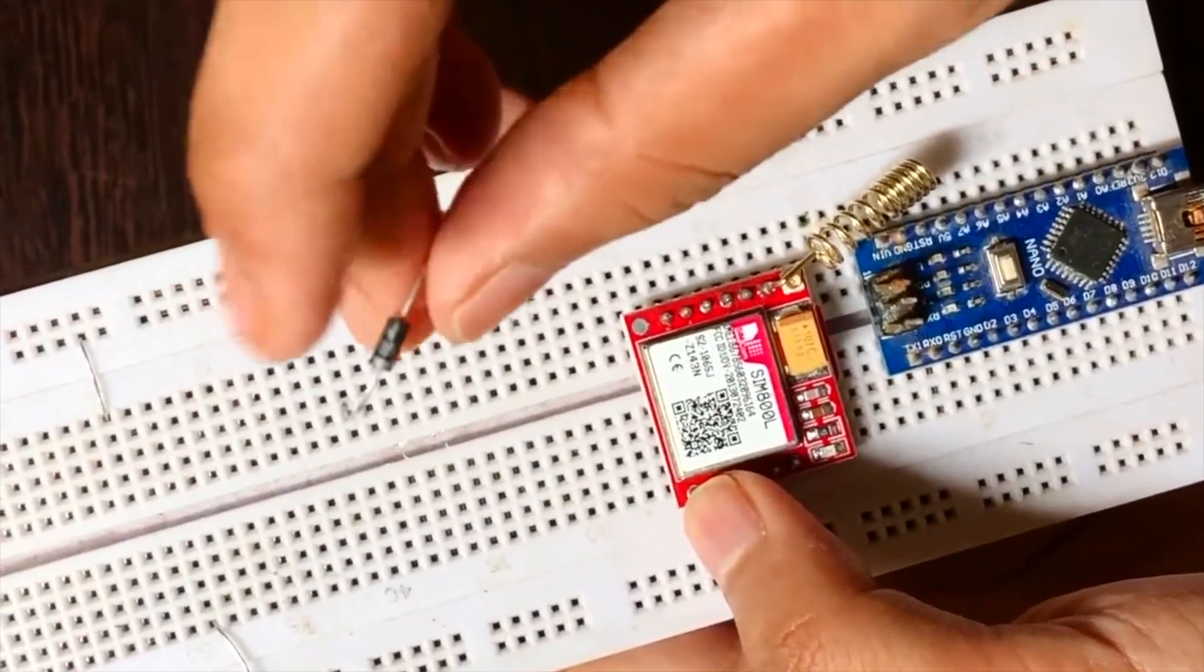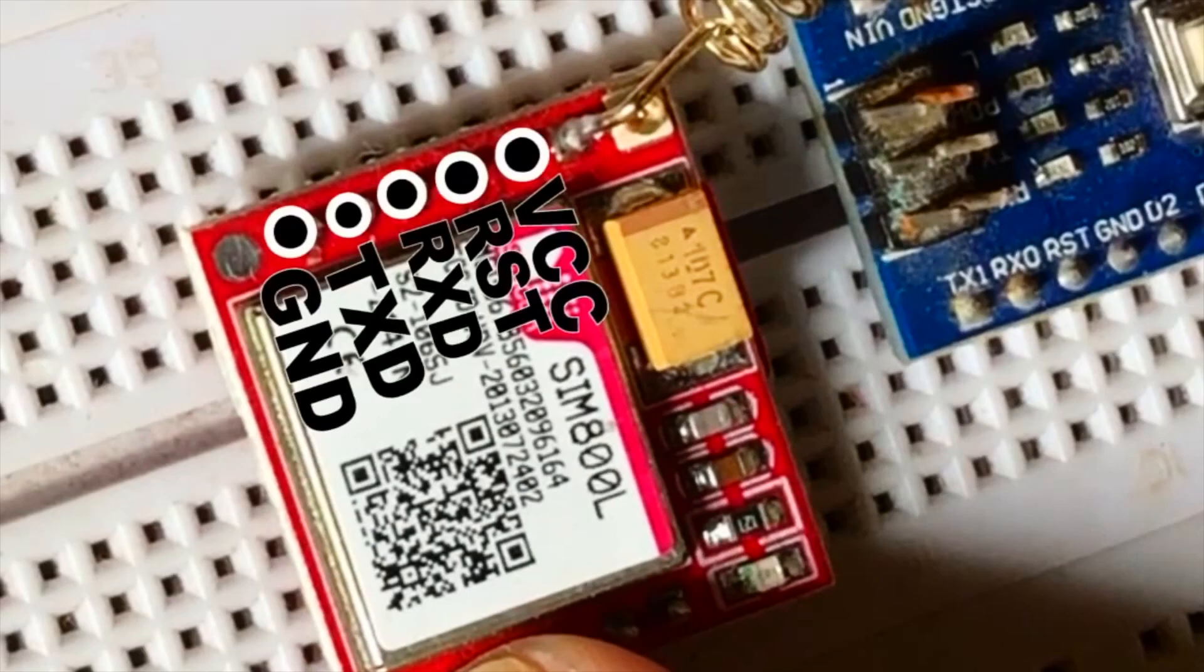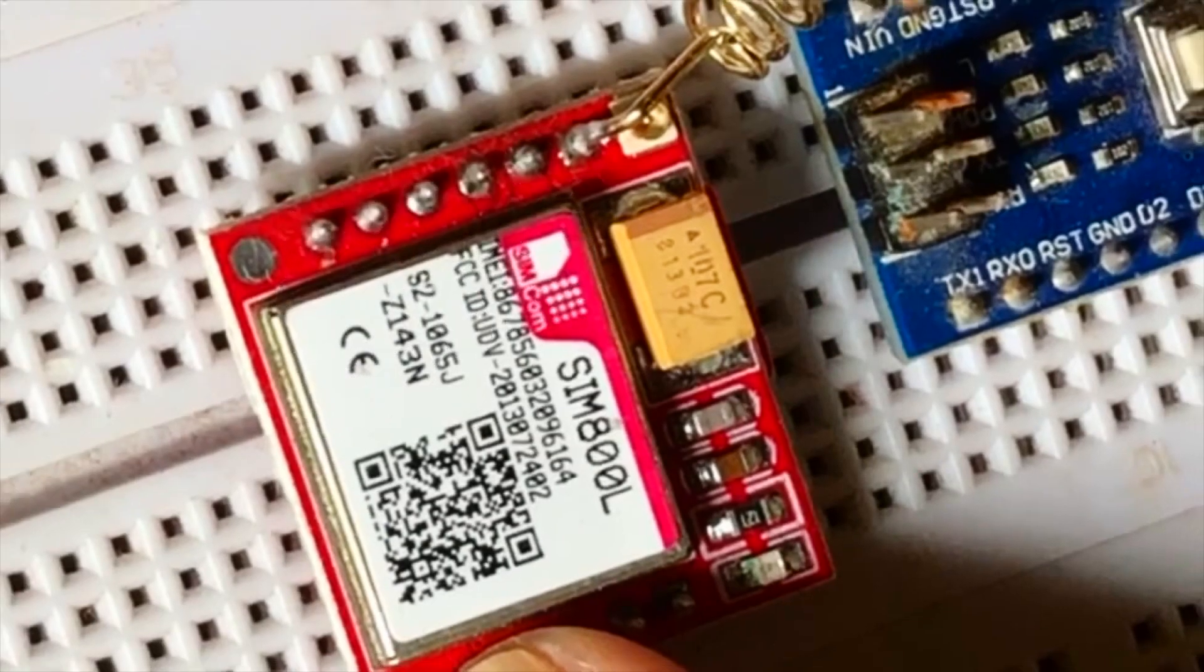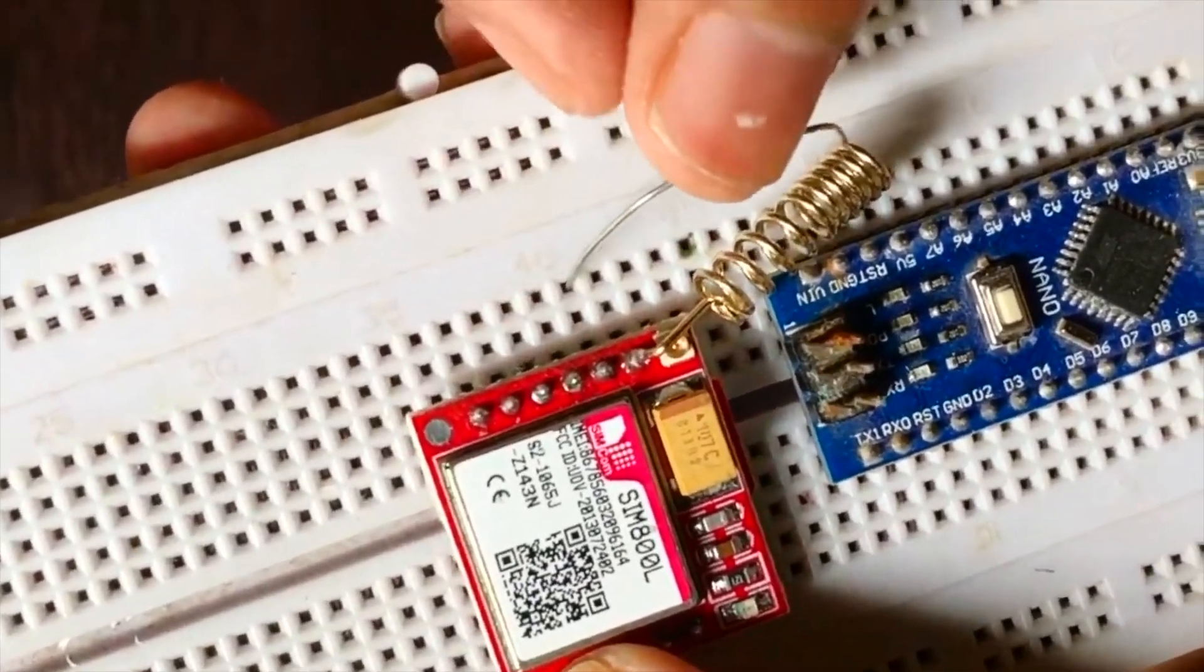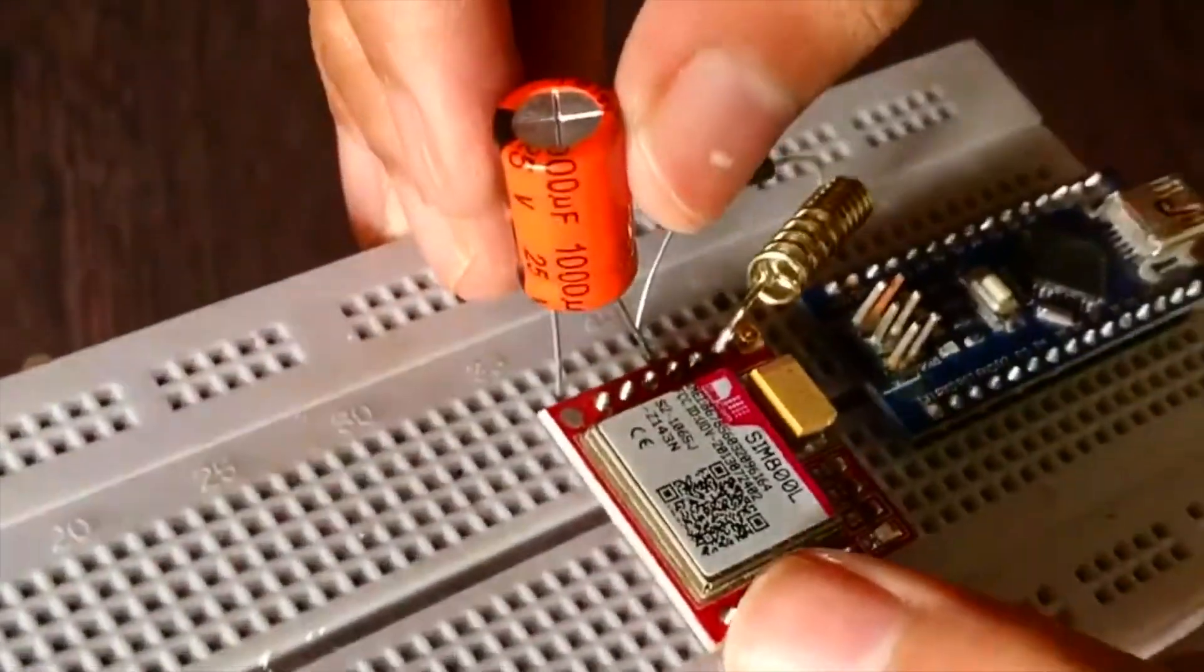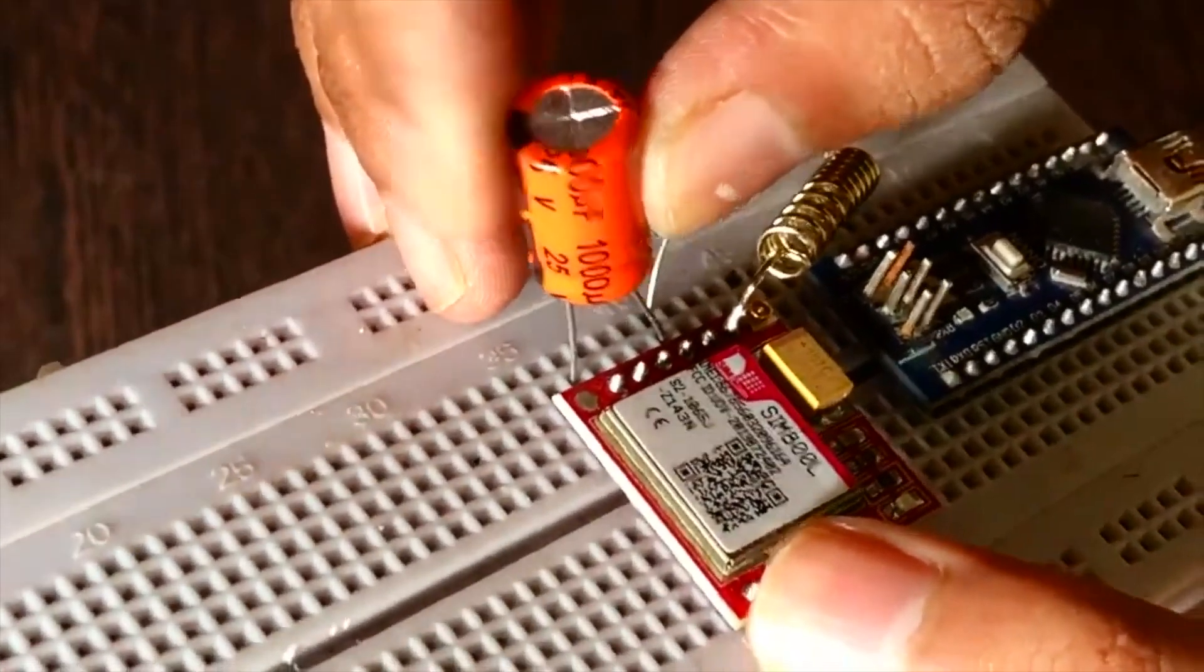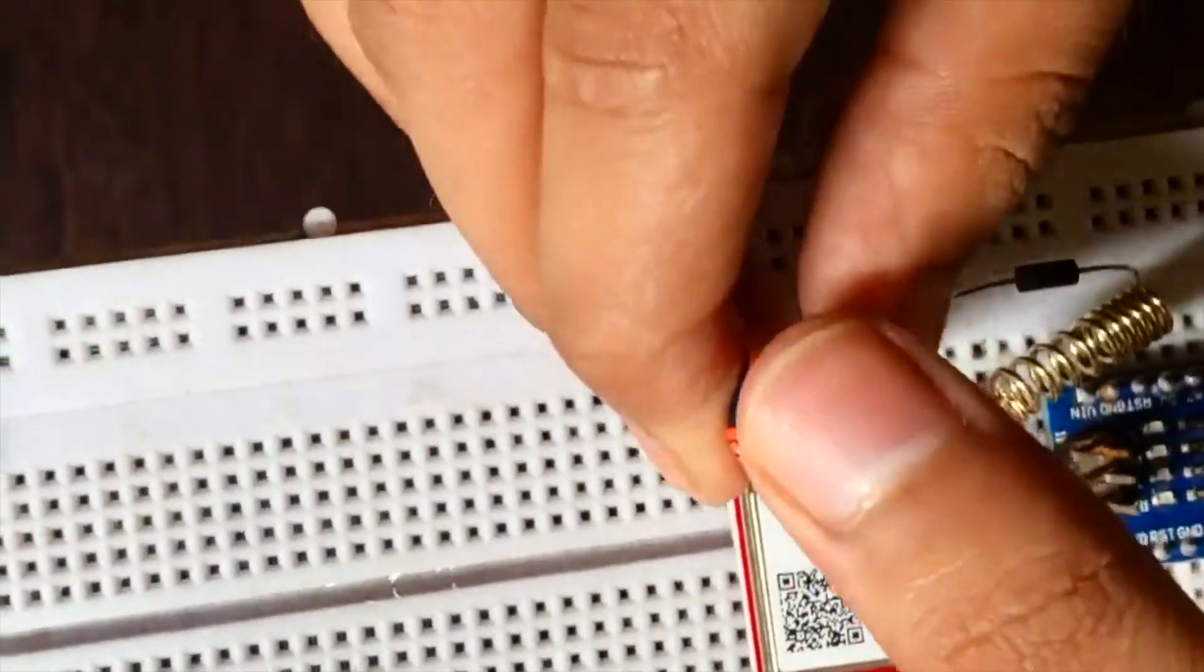This is the 4007 general purpose diode which we need to fix on the VCC and the 5V of the Arduino. Then we need a 1000 microfarad 16V capacitor with the positive terminal to the VCC and the negative to the ground.